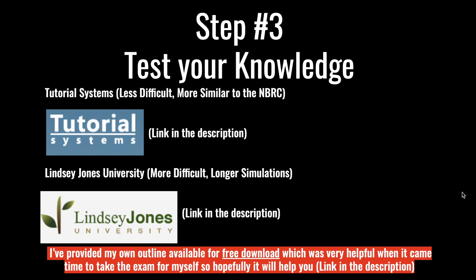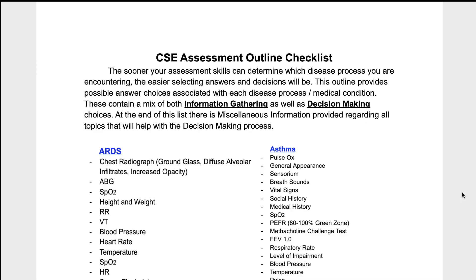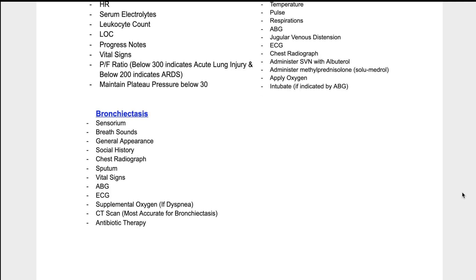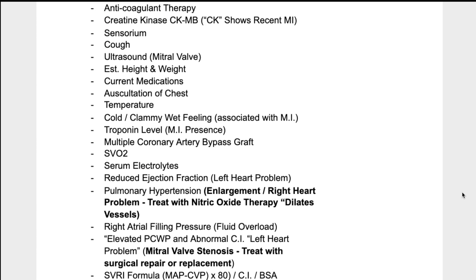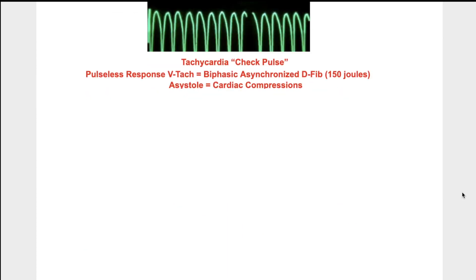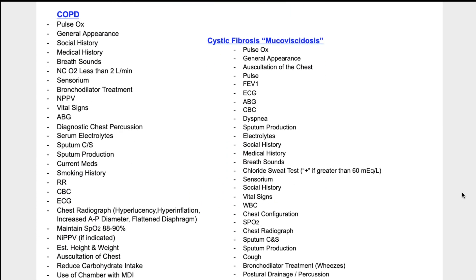I've also added a free download — a link to my outline that I created specifically for the CSE will be in the description. This is a list of possible answers for each type of disease process. For example, if you know you're dealing with asthma, you'd select pulse ox, select general appearance — I've organized the list of diseases that way. It's a general understanding of what you should know.